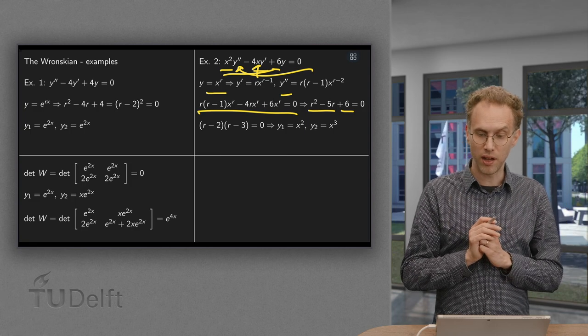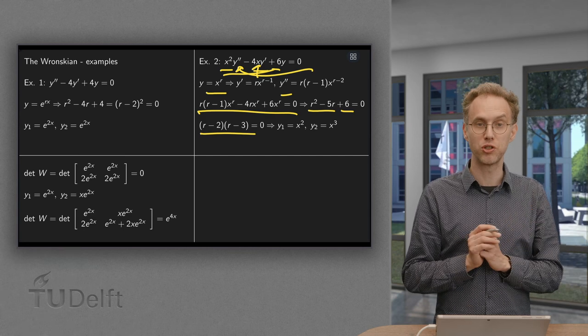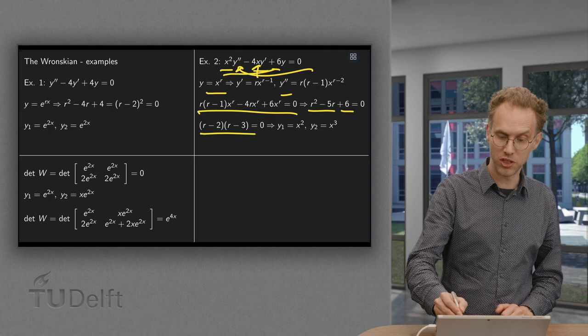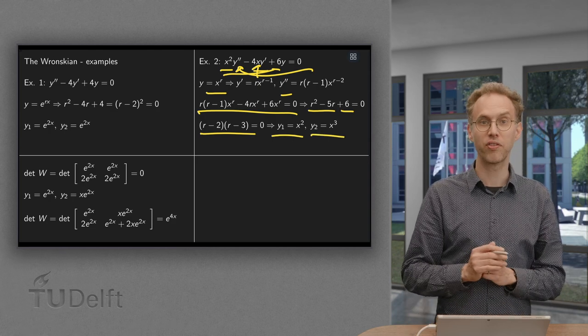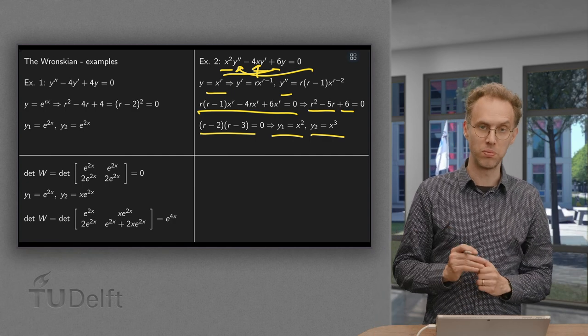So you can find solutions because we have (r - 2)(r - 3) = 0. So r = 2 or r = 3. So it gives us as solutions x² and x³. So there we have our two independent solutions, x² and x³.